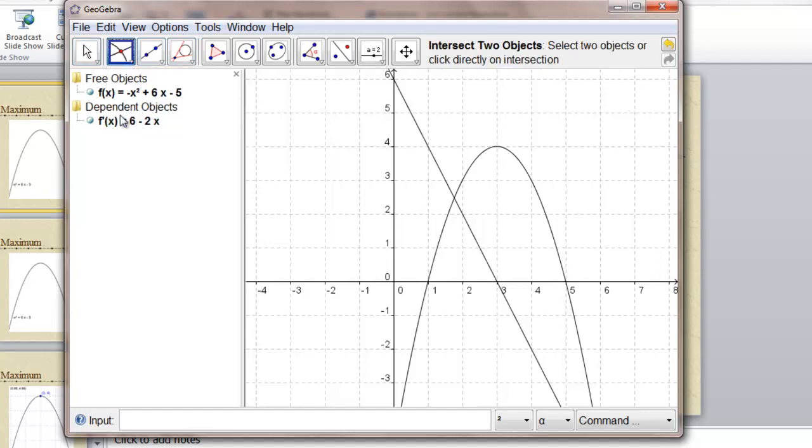All you have to do is intersect two objects. The slope function and the x-axis. That point is a, 3, 0. The x value is 3.